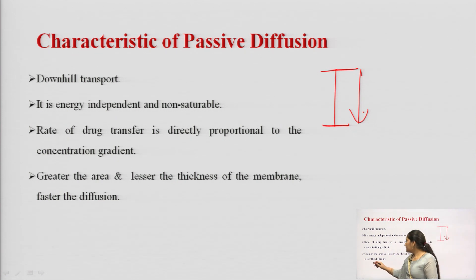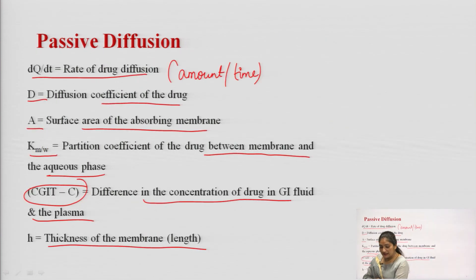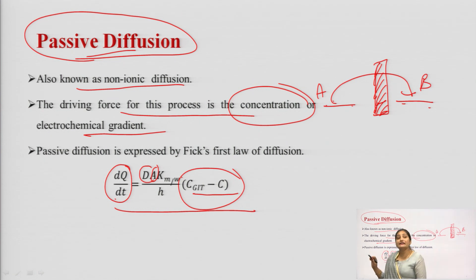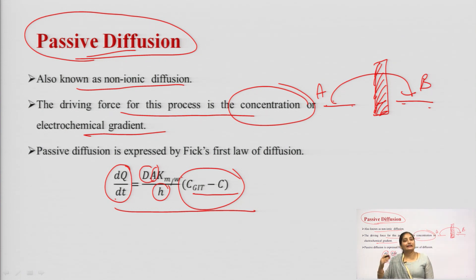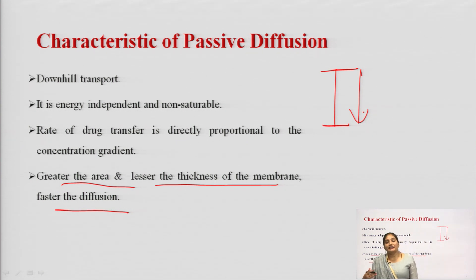Another characteristic: greater the area and lesser the thickness of the membrane, faster will be the diffusion. The rate of drug diffusion is directly proportional to area A and inversely proportional to thickness H. So the rate of diffusion increases with increased area and decreases with increased membrane thickness.